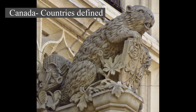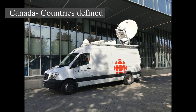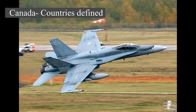Canada is a country in North America. Its 10 provinces and three territories extend from the Atlantic Ocean to the Pacific Ocean and northward into the Arctic Ocean, covering over 9.98 million square kilometers (3.85 million square miles), making it the world's second largest country by total area. Its southern and western border with the United States, stretching 8,891 kilometers (5,525 miles), is the world's longest binational land border. Canada's capital is Ottawa and its three largest metropolitan areas are Toronto, Montreal, and Vancouver.